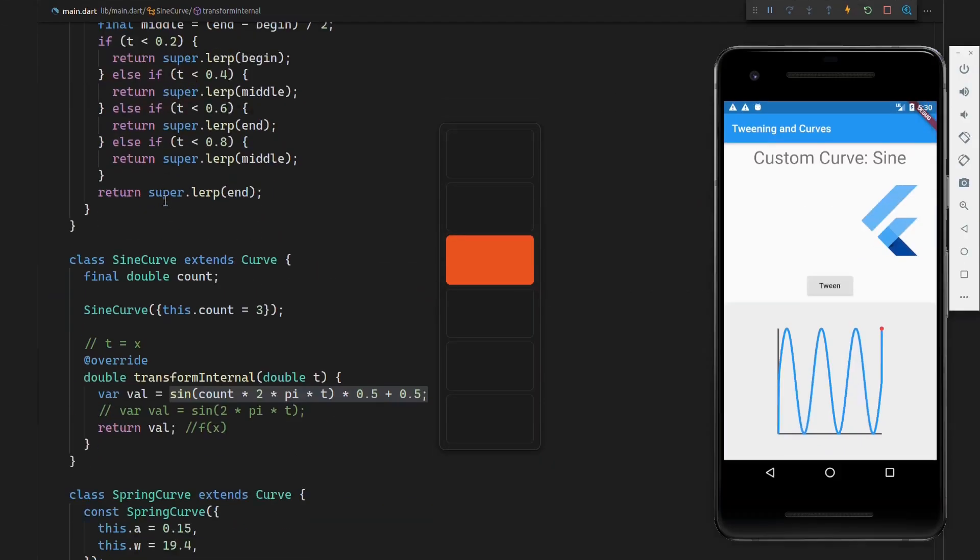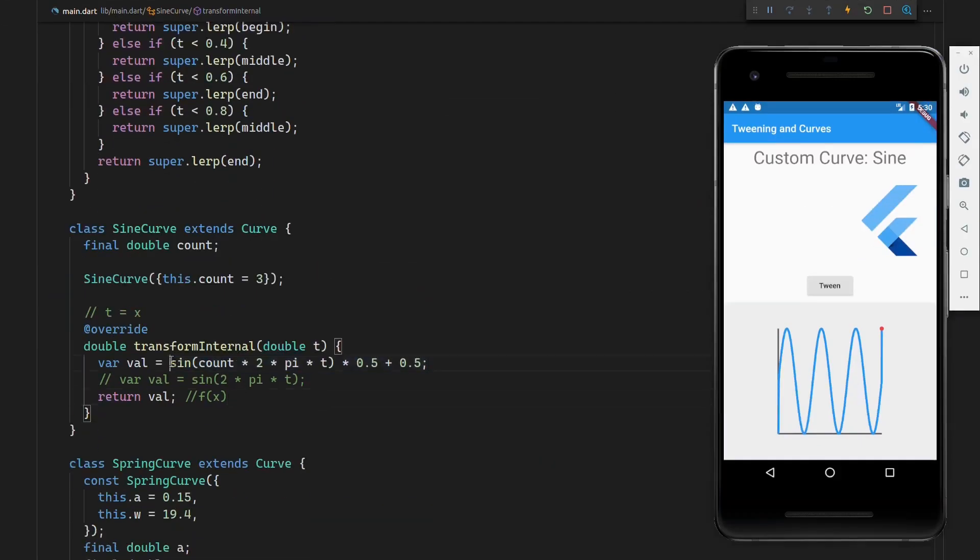And the function that we have here is the exact same function that you can see over here. Please note that how we created this function, we can use a similar method to basically create or pass back any value. If we wanted to, we could just return one and that would be a fixed value. We can create a linear curve which would be a straight line. We can create an exponential curve. We can literally do whatever we want in this little function over here.